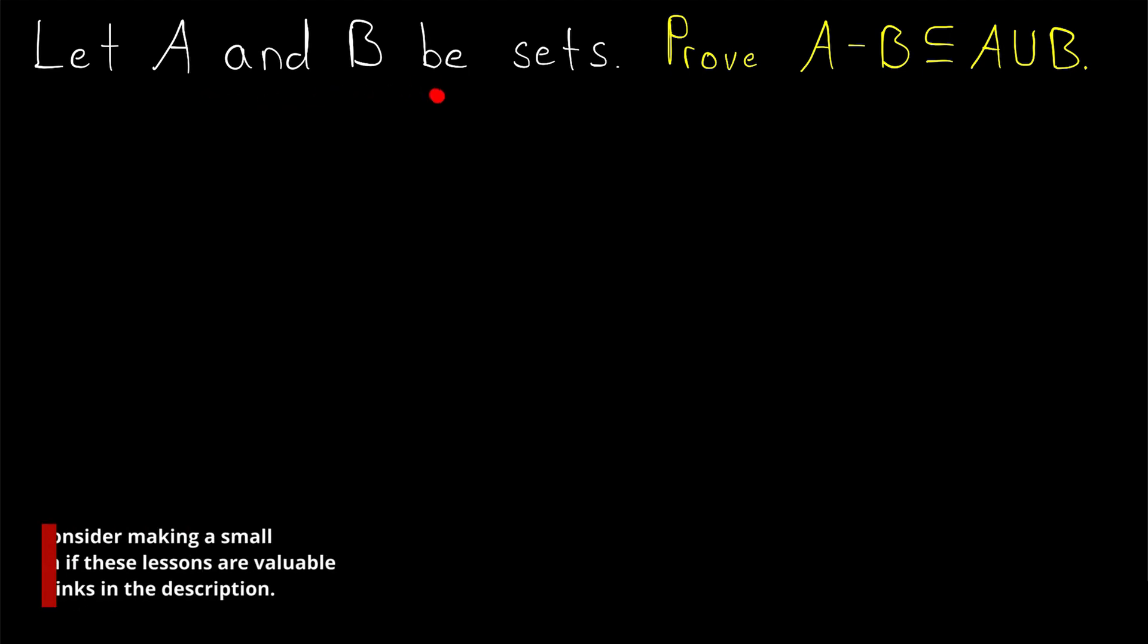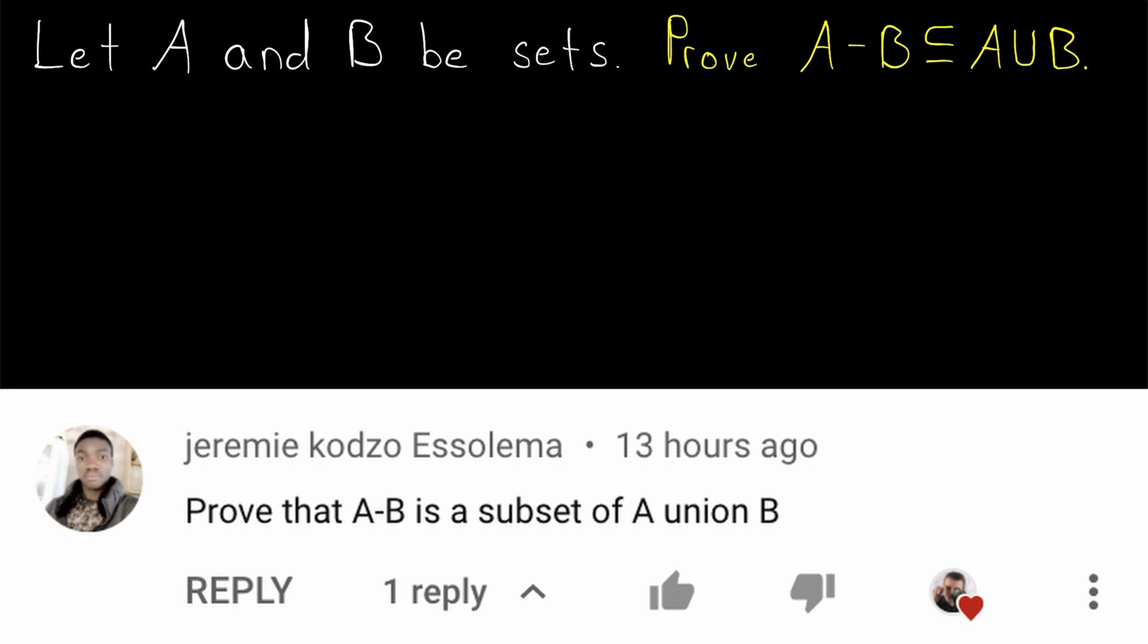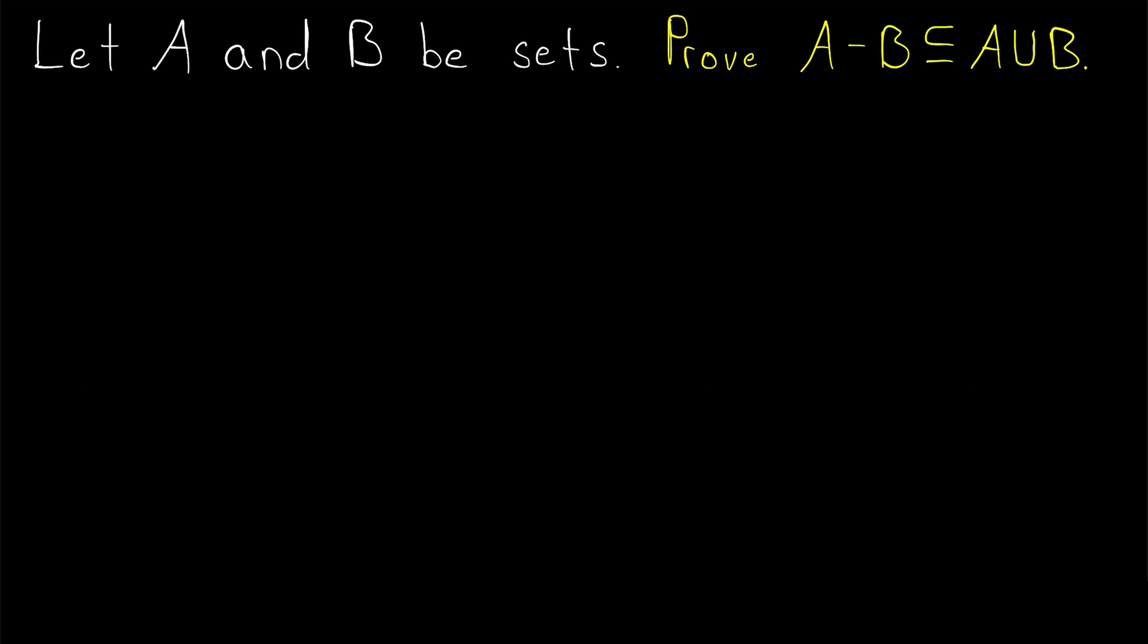Let A and B be sets. We're going to prove that A minus B is a subset of A union B. This is a very straightforward subset proof, so give it a try yourself before watching the rest of the lesson.